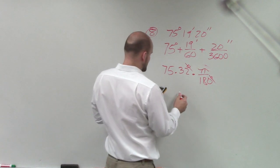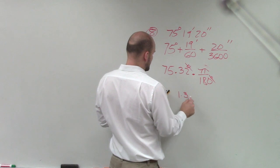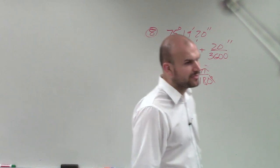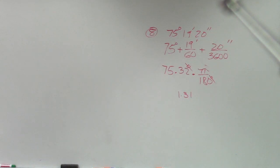is I just do 75.322 times π divided by 180. And my answer in radians is 1.31 radians. I can't remember how much I said to round, but it's just going to be 1.31 radians. OK? Got that one?